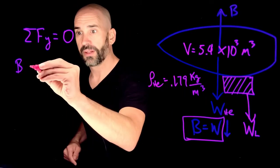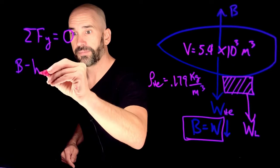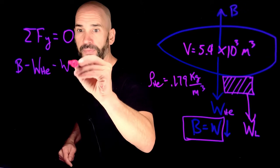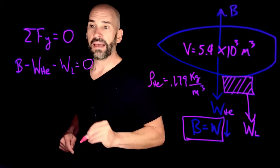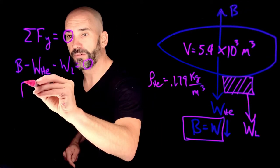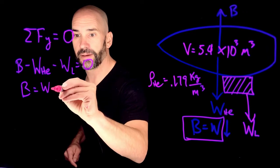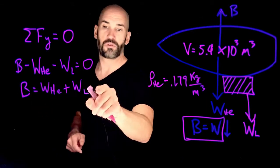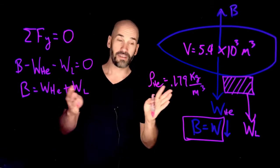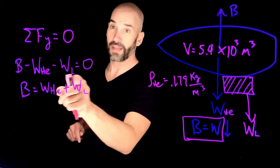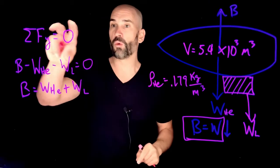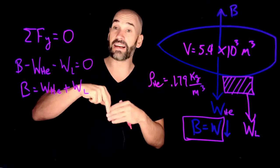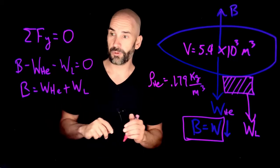And what forces are going down? Well, the weight of the helium, and the weight of the load. And that just means that the buoyant force must equal the weight of the helium plus the weight of the load. Now, some people just jump straight to this step. At this point in my physics career, I do jump to this step. But if you want to remind yourself of where this comes from, you're really just doing an analysis of Newton's second law.